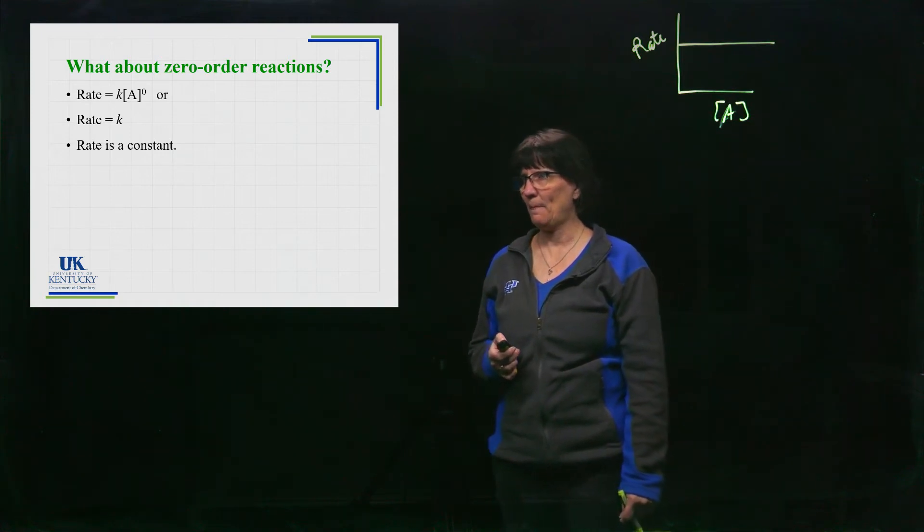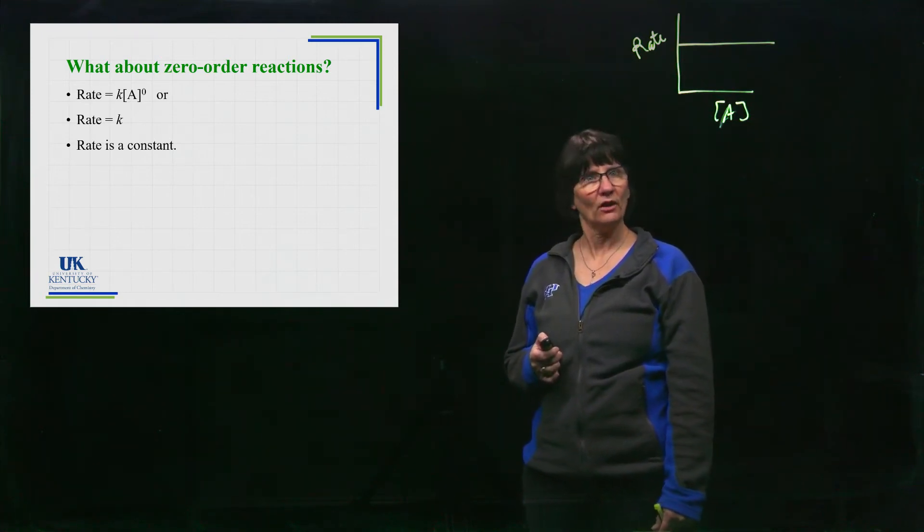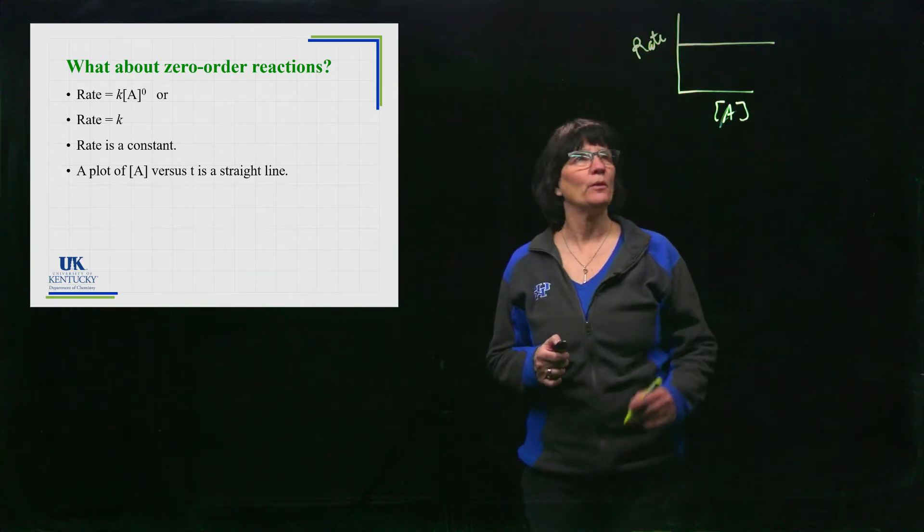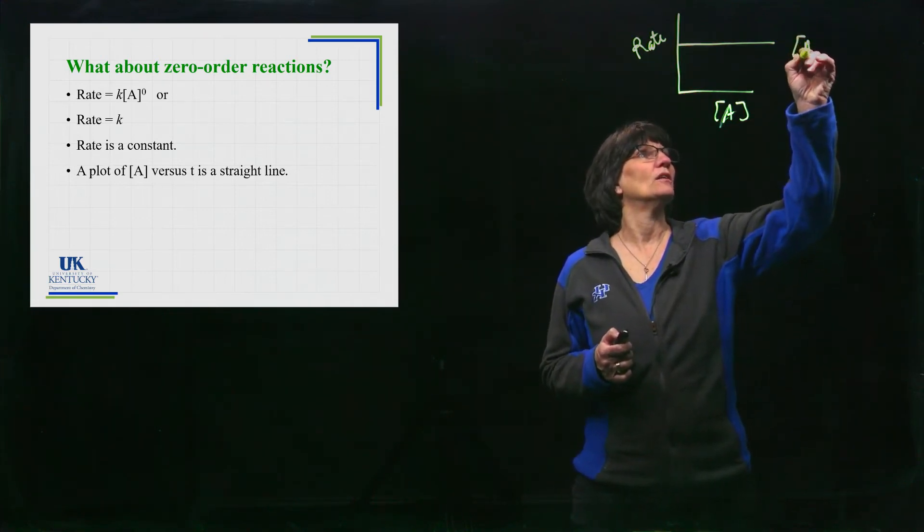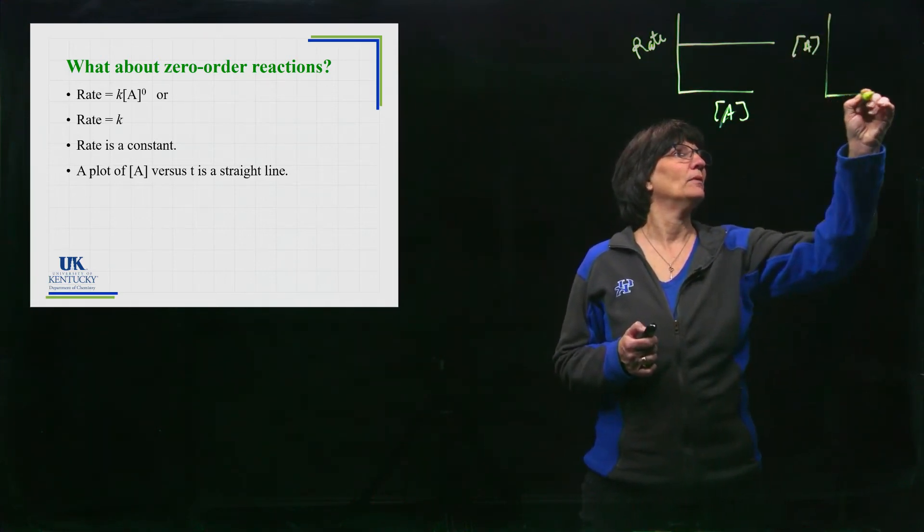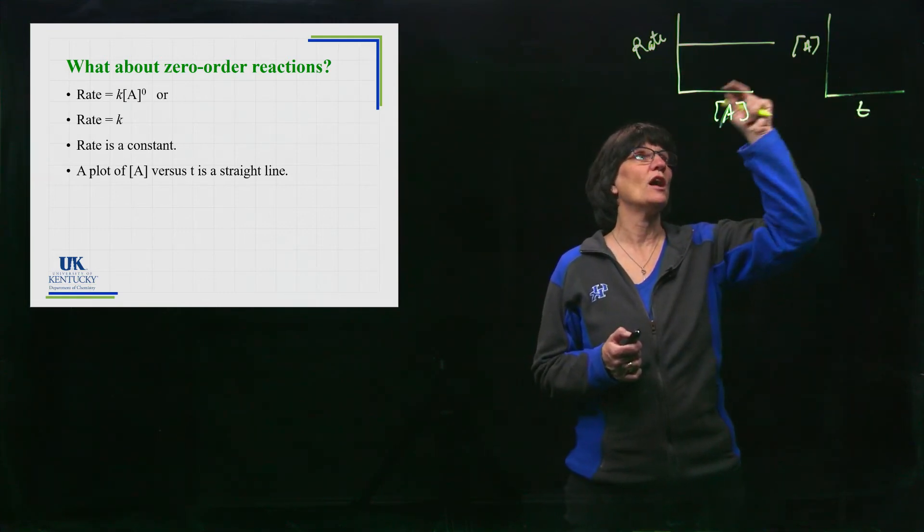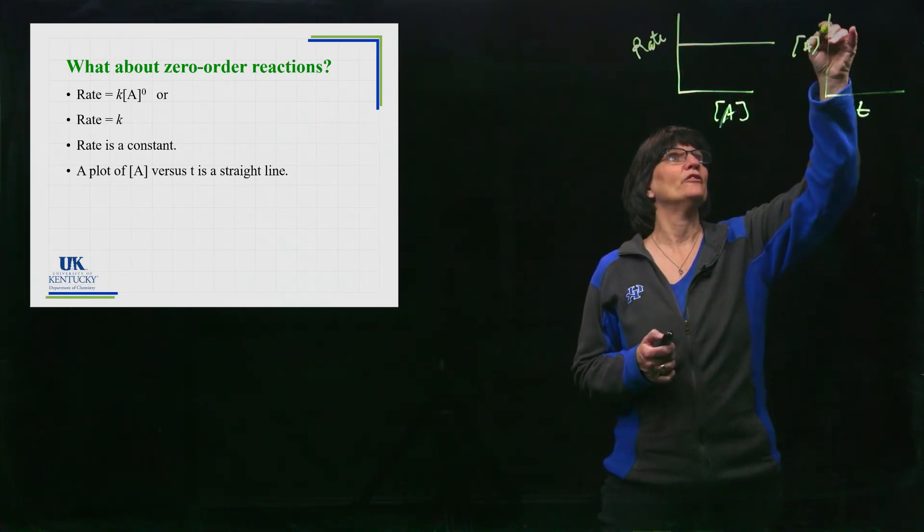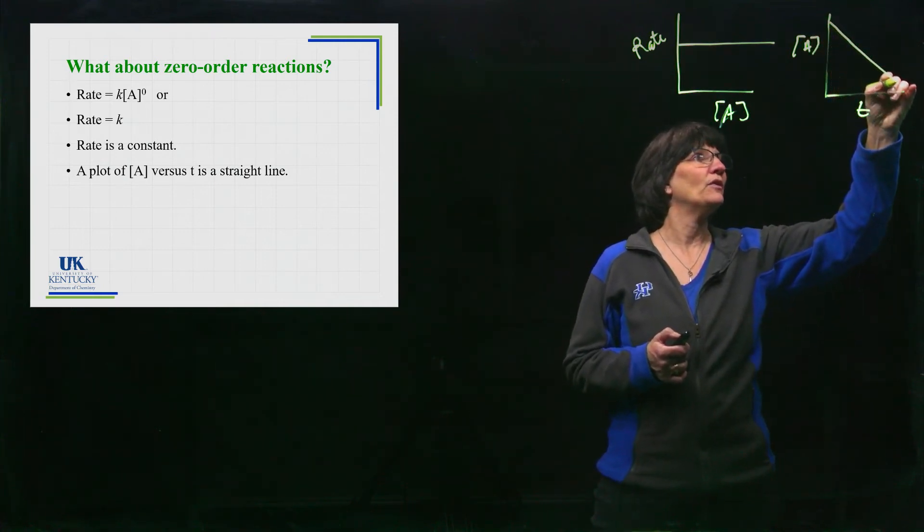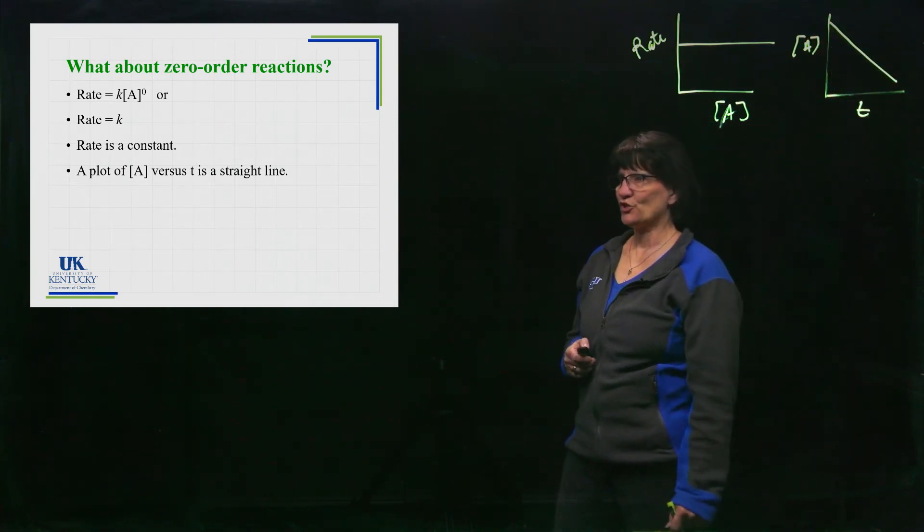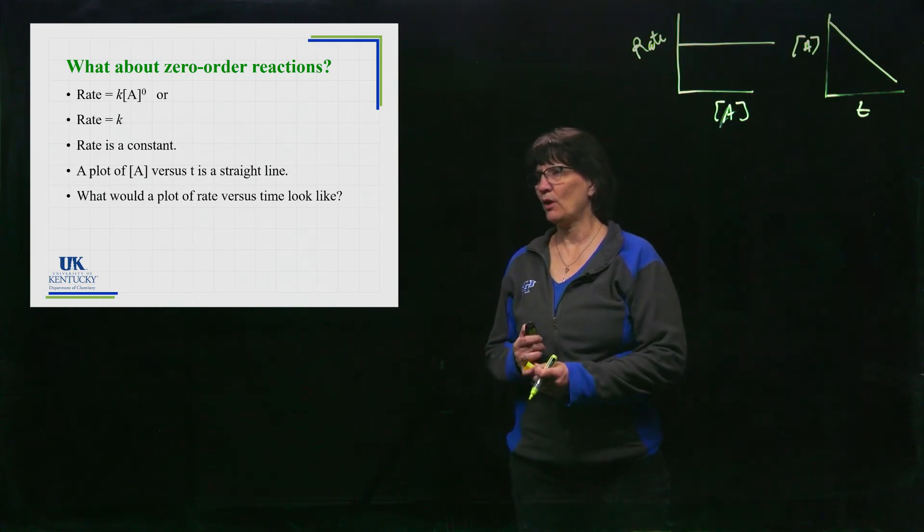If we plotted rate versus concentration, the rate doesn't change with concentration—we have a nice straight line like that. Rate is a constant. But if you were to plot concentration versus time, the concentration is going to drop linearly with time, and that's how you would get your straight line for that.